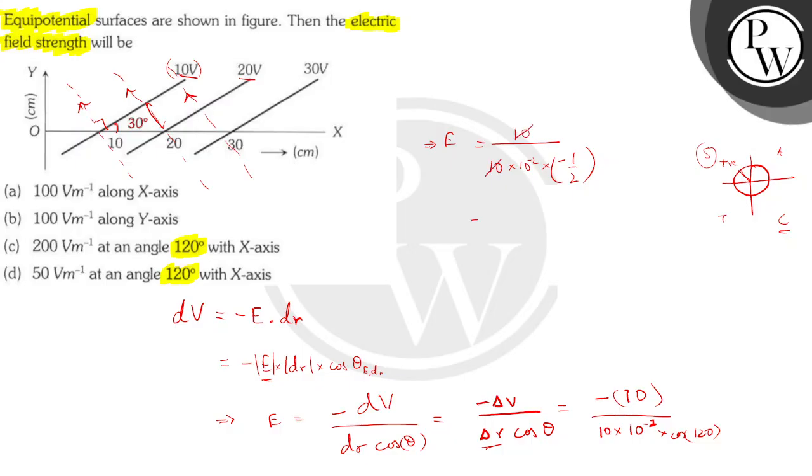10 and 10 will get cancelled. So we have nothing but 2 into 10 power 2 which is going to be 200 volt per meter. Right? So we have the magnitude as 200 volt per meter and as I've shown here.